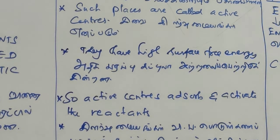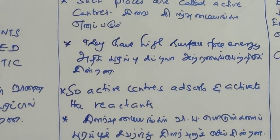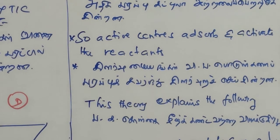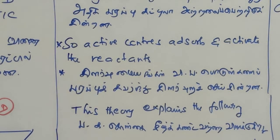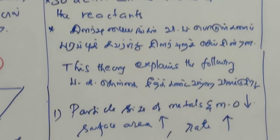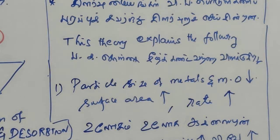So the active centers adsorb and activate the reactants. The significance of active centers: in this theory, the fine particle nature of the catalyst is important. If the catalyst is in fine particles, surface area increases. Surface area relates to the number of active centers, and adsorption increases accordingly.